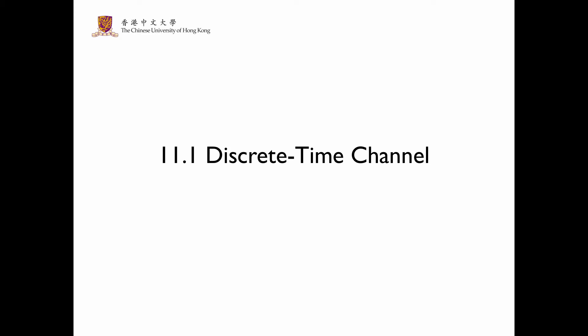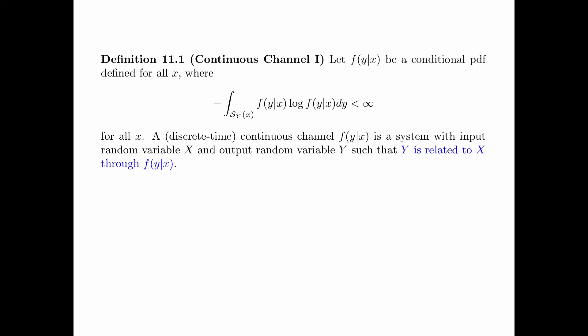We first discuss discrete time continuous valued channels. In Chapter 7, we gave two definitions for the discrete channel. In a similar fashion, here we give two definitions of the continuous channel. Definition 11.1 is the first definition. Let f(y|x) be a conditional PDF defined for all x, where the negative integral of f(y|x) log f(y|x) dy, where the integration is over the support of y conditioning on x, is finite for all x.